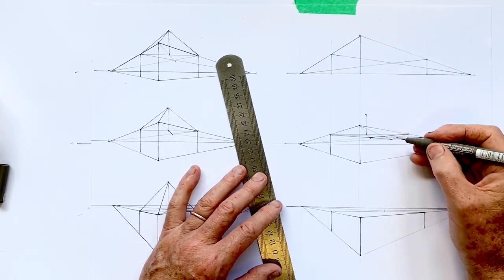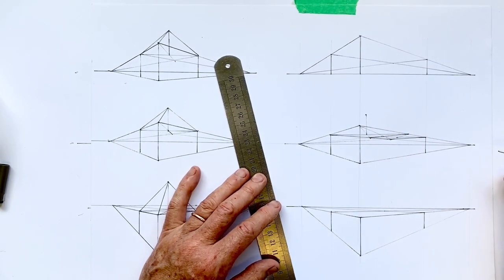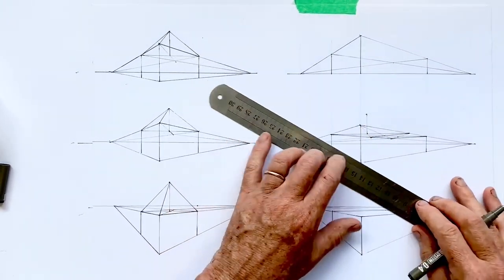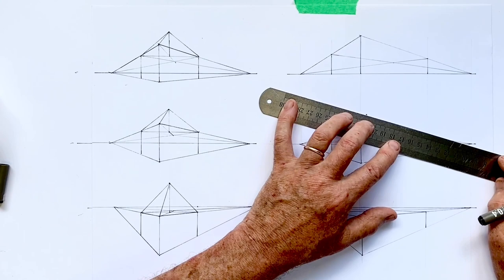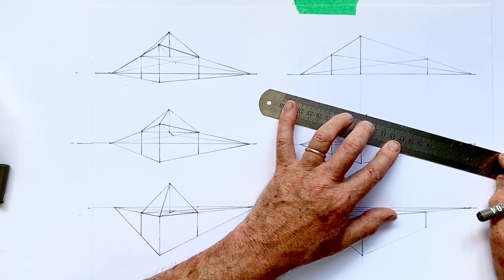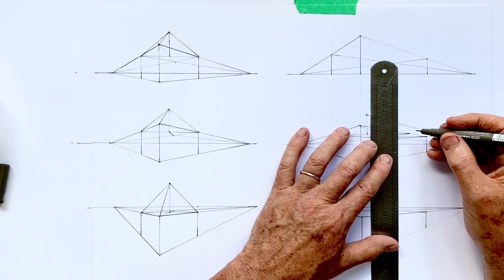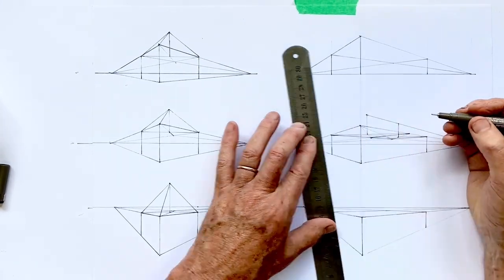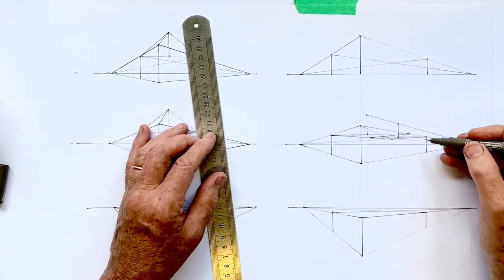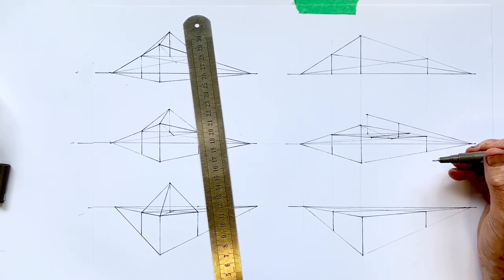Now to get the height of the other end of the roof, I need to apply the perspective principle to it. So I connect it to the vanishing point. And then the vertical line. This in effect becomes our horizontal ridge along the top of our roof.